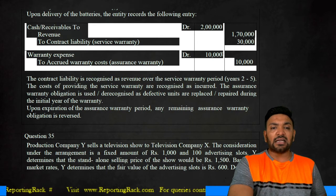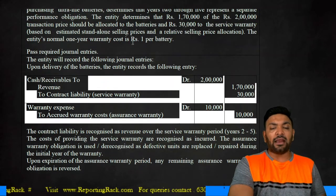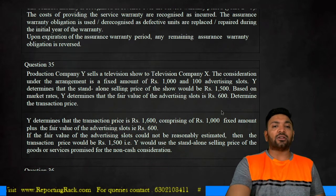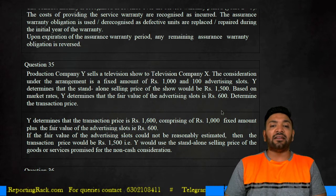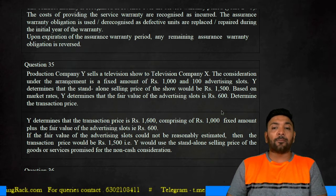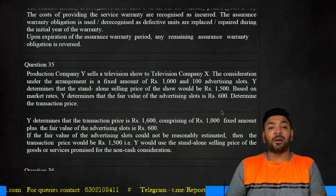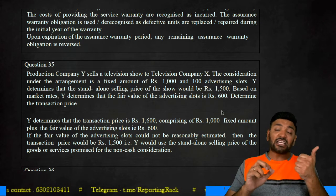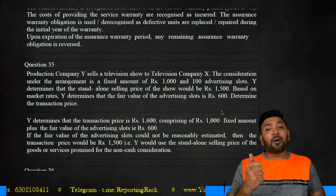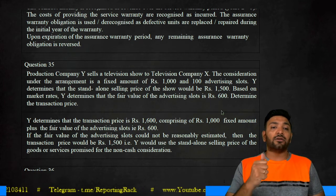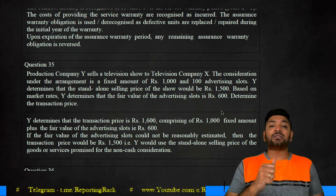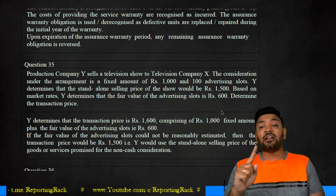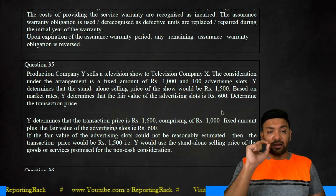Note: the answer is 100 rupees, not 10,000 — because it is one rupee per battery for 100 batteries. Now question number 35. Production company Y sells a television show to television company X. The consideration is a fixed amount of 1,000 plus 100 advertisement slots — so consideration is given in two forms: cash of 1,000 and non-cash of 100 advertisement slots. Y determines the standalone selling price of the show to be 1,500, and based on market estimates, the fair value of advertisement slots is 600.